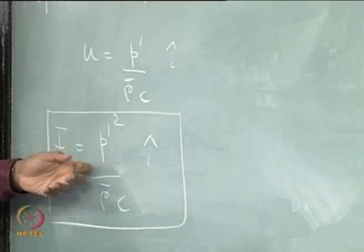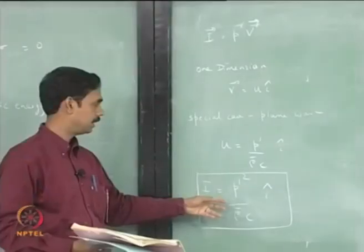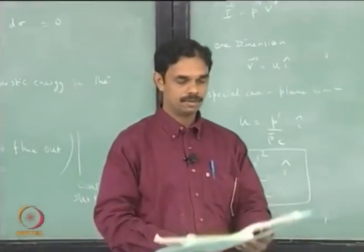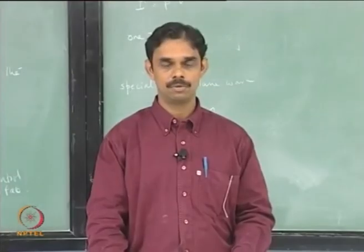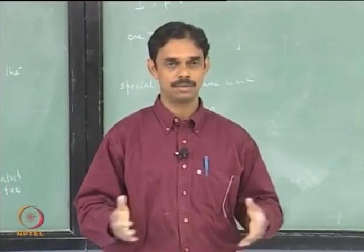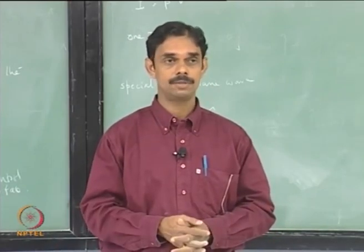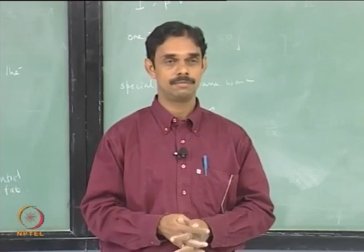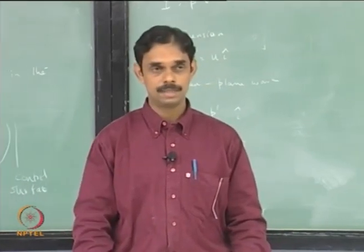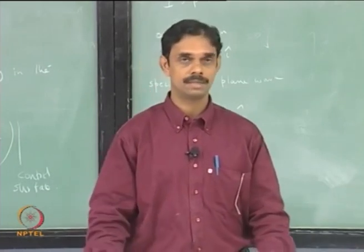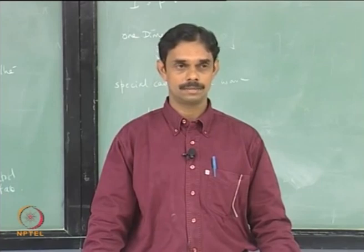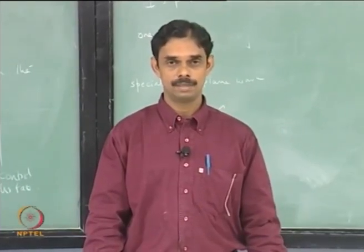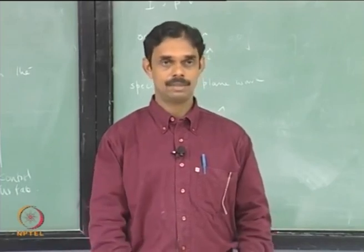The expression for acoustic intensity for the one-dimensional case is p prime squared over rho-bar c, which can be deduced purely from pressure measurements. To summarize today's lecture: we looked at harmonic waves and wrote expressions for them; we found equivalent expressions using exponential functions and discussed cosines, sines, and e^(ix). We derived acoustic velocity in terms of acoustic pressure, discussed particle displacement, explained why complex numbers are used — imaginary parts simply represent phase. We derived the acoustic energy equation as a corollary from continuity and momentum equations, and introduced acoustic intensity.